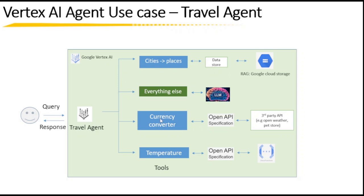We are also going to create an Open API specification that will connect to a third-party API. Any queries related to currency conversion will go and talk to that third-party API and get the response through the Open API specification of the agent builder tool concept. Another route will deploy a cloud function, and through Open API specifications it will connect — any queries related to the temperature of a city will be invoked through this route and the response will go back to the user.